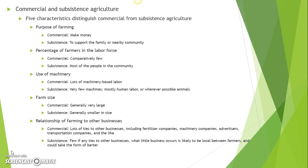The fifth characteristic is the relationship of farming to other businesses. Commercial farms have lots of ties to other businesses, including fertilizer companies, seed companies, machinery companies that sell tractors and harvesters and combines, milking machines, advertisers, agribusiness companies, and transportation companies to get the product to market. Subsistence farming, on the other hand, has very few if any ties to other local businesses. What little business occurs tends to be between local farmers and could very easily take the form of barter — for example, a basket of wheat exchanged for a basket of rice.